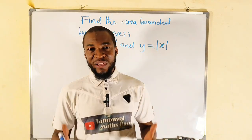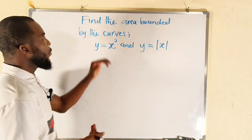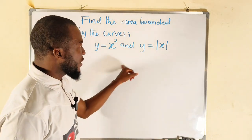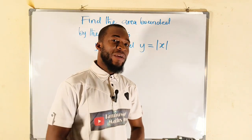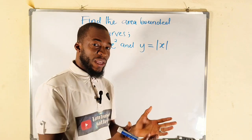Hello good viewers, still on definite integrals. Here is our question for today. We are asked to find the area bounded by the curves y = x² and y = |x|. As always, we are going to sketch them and see how they look like.